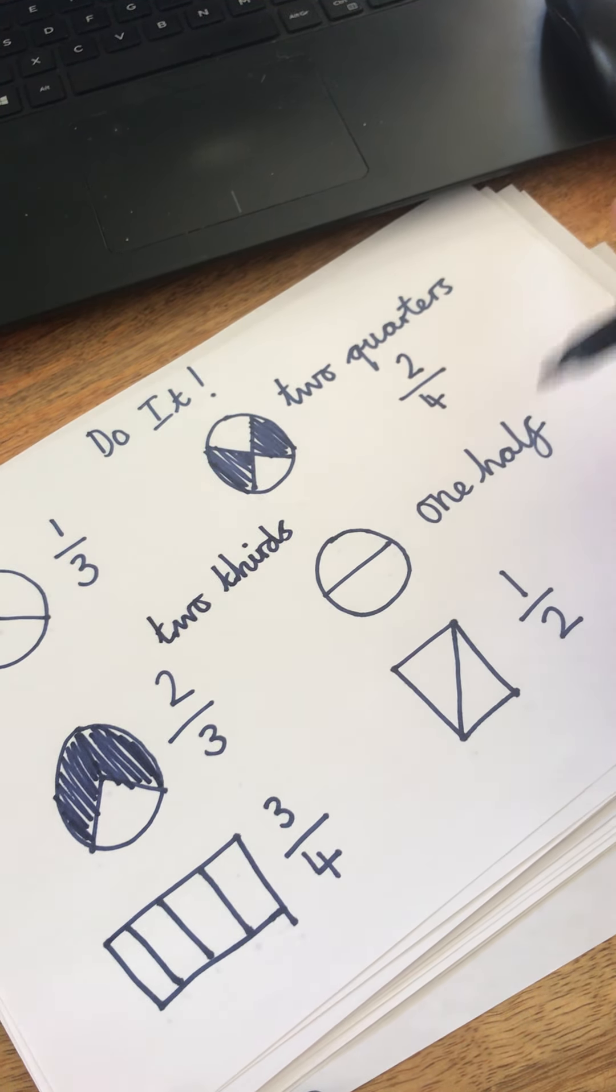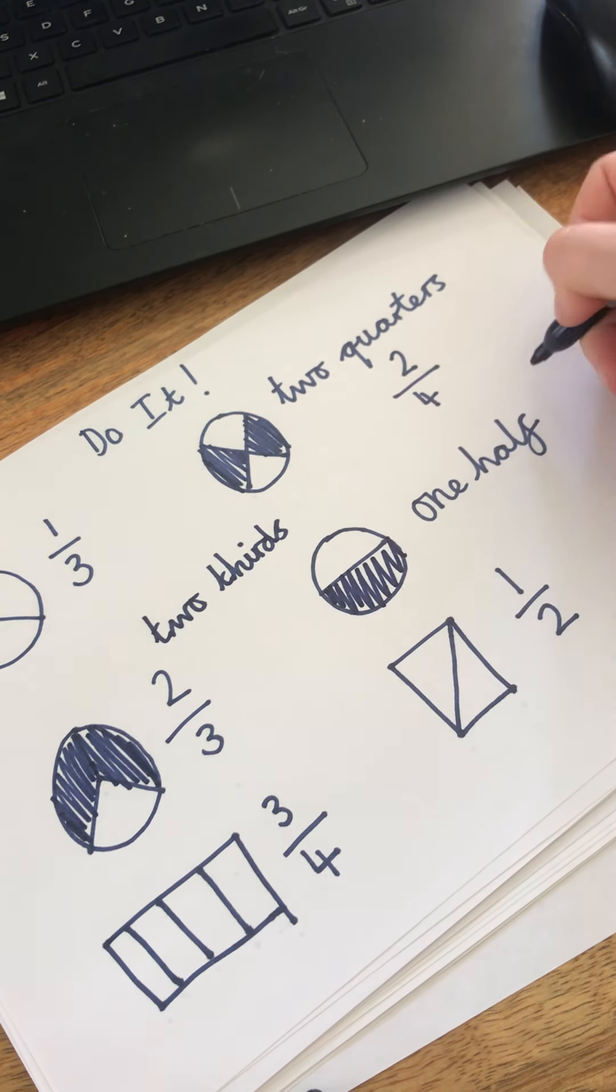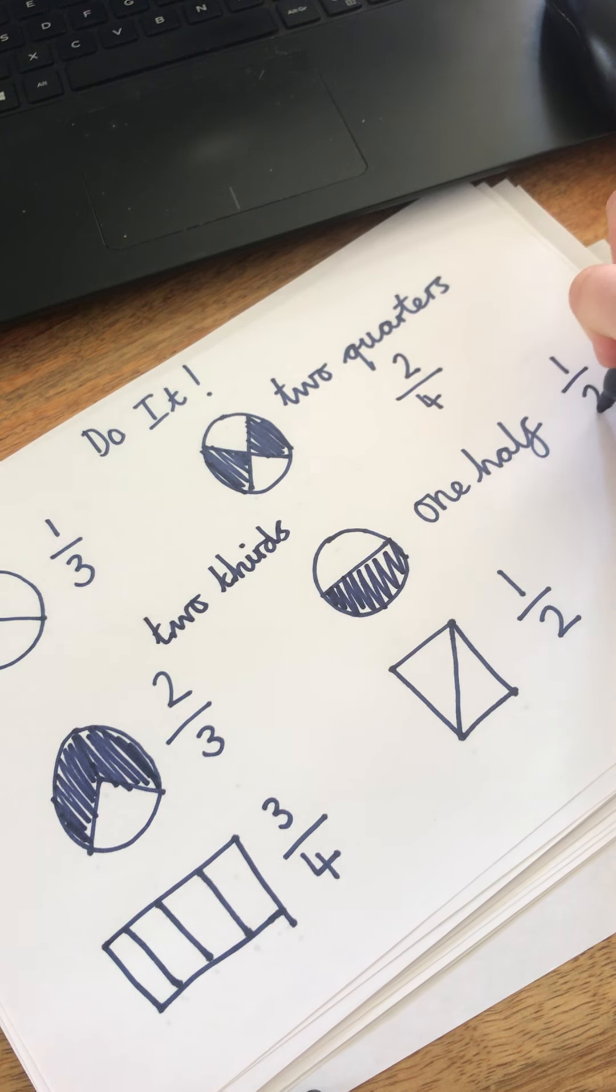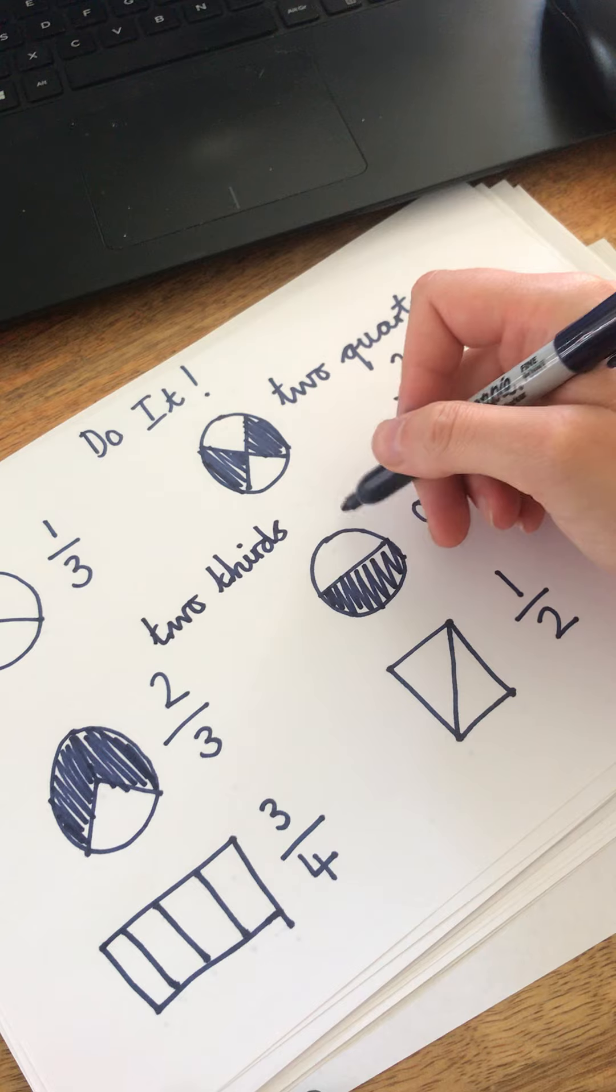This one says one half. It doesn't matter which one you colour in. One half. And I know that's written like this. Because one part has been shaded in, and there are two parts all together.